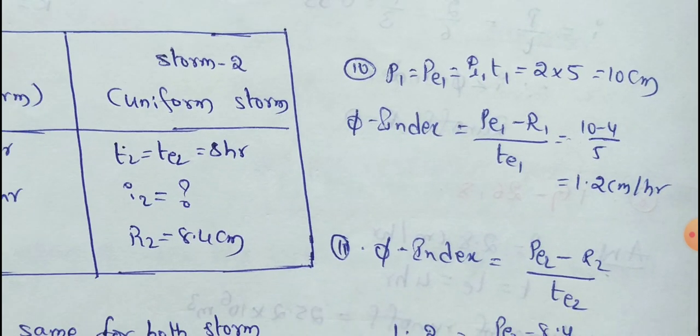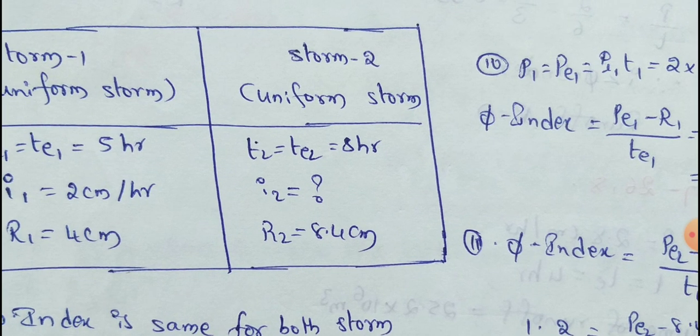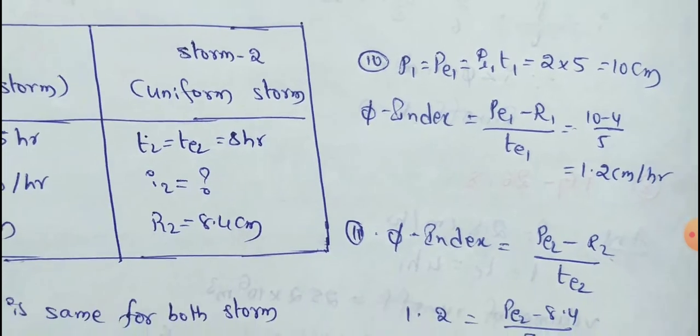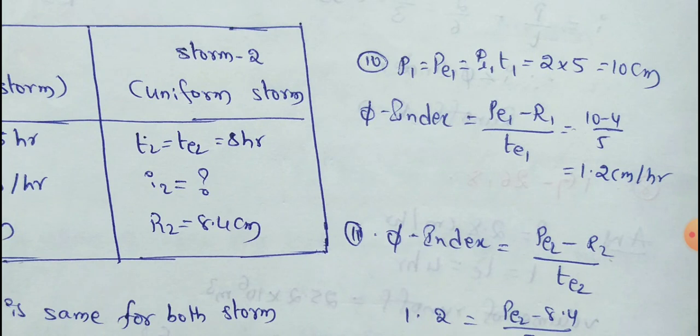P1 equals PE1. The P value means intensity multiplied by time, so precipitation equals intensity of rainfall times time. I1 times T1: I1 is 2, T1 is 5, so 2 times 5 equals 10 cm. We use P1 equals 10, R1 value, and T1 value, and substituting into the formula simplifies to 1.2 cm per hour.